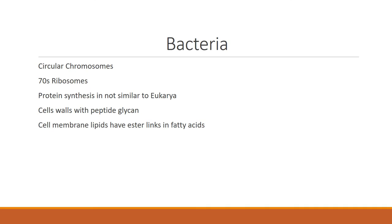Bacteria, also known as prokaryotes, have circular chromosomes. The ribosomes are much smaller — they're 70S size. Protein synthesis is not the same way as eukaryotes. Cell walls have peptidoglycan in them. Cell membrane lipids have ester links and fatty acid chains.